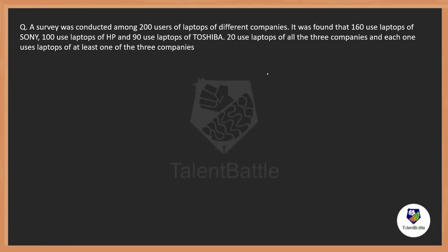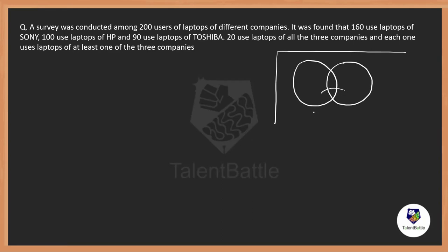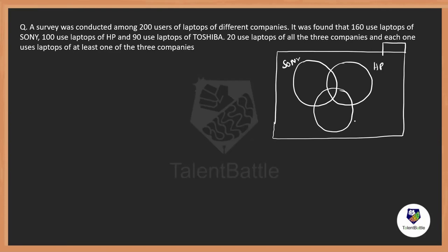We need to represent the question in a diagrammatic format. Whenever there are three parameters — here we have Sony, HP, and Toshiba — we take three circles with an intersection part among the three circles. Some rules to follow: the total number of people surveyed should be outside the circles. The entities are Sony, HP, and Toshiba. If there are people who don't use any, they go outside — but here everyone uses at least one.